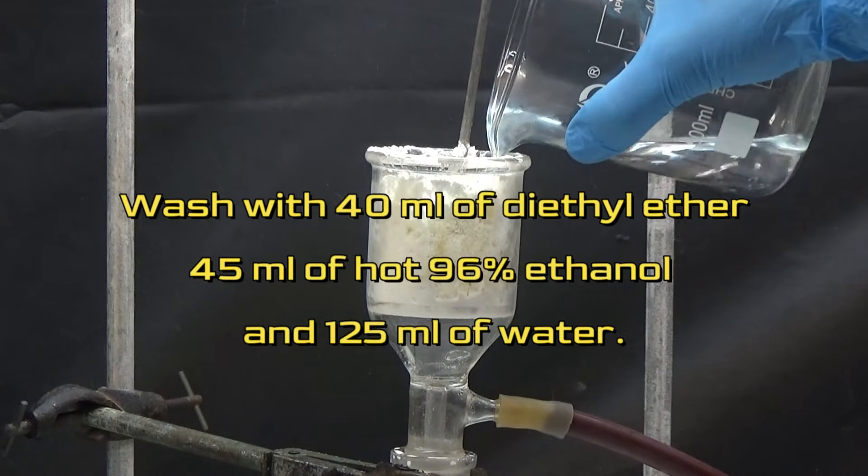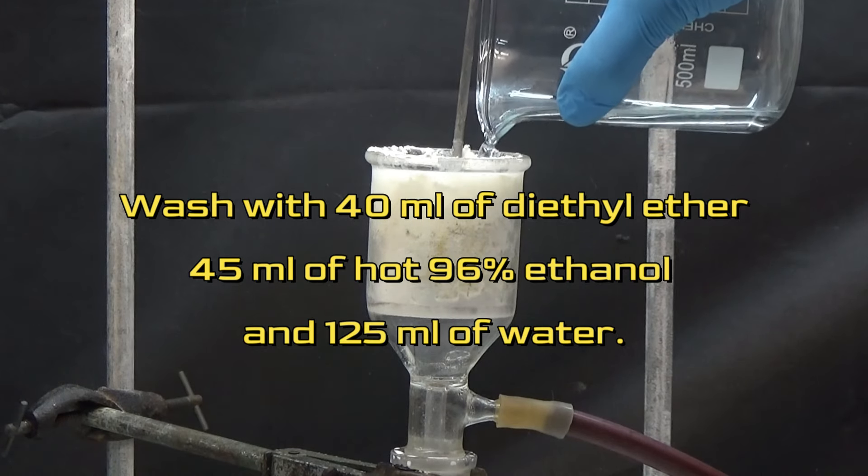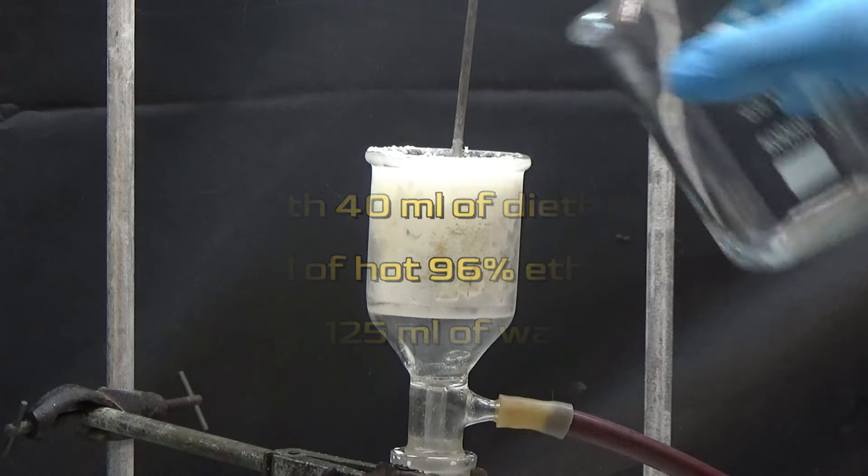Wash with 40 milliliters of diethyl ether, 45 milliliters of hot 96% ethanol, and finally with 125 milliliters of water.